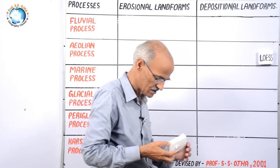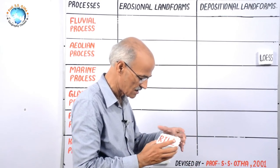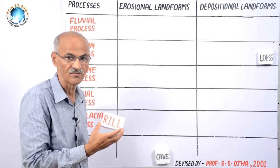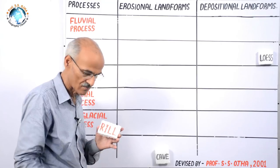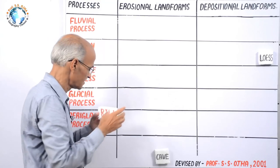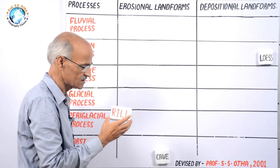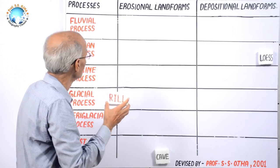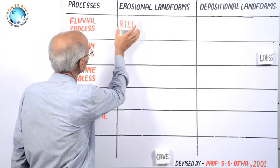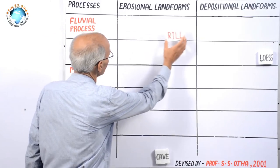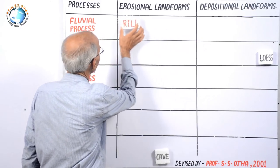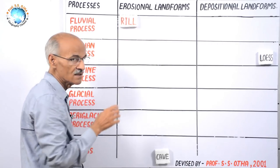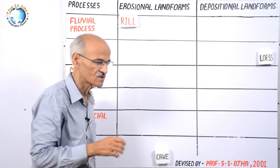Next name slip is rill. Rill is the landform by which process? Certainly by the fluvial process. In fluvial, is it erosional or depositional? Certainly erosional. In the erosional column, do you put it in the beginning, middle, or end? It will be put in the beginning — rill, gully erosion — that we have studied and learned.